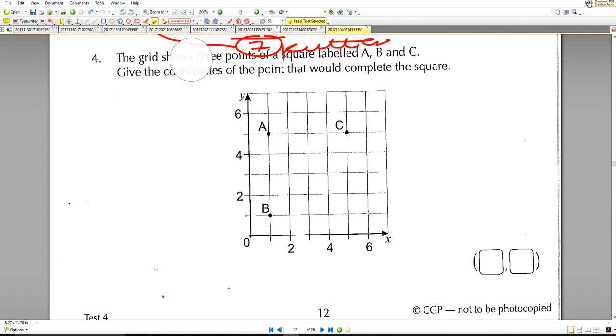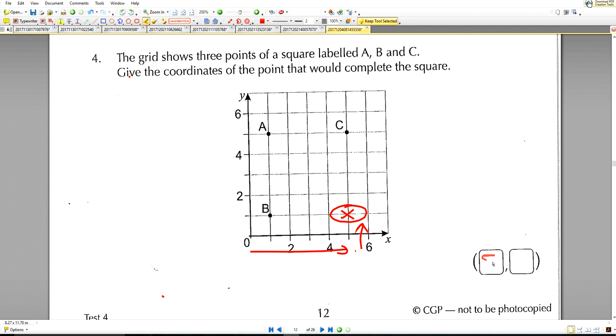Question number four. The grid shows three points of a square labeled ABC. Give the coordinates of the point that would complete the square. That would be here, so go along the corridor and then up the stairs. You're going to go five along the corridor and one up the stairs, so that would be 5, 1. That's where it is.